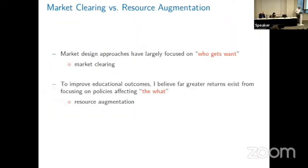I want to set up a debate between two schools of thought in market design, especially in education. The first approach focuses on the question of who gets what — I'll call that the bucket of market clearing policies, inspired by Al's book. I want to contrast that with policies that focus on the 'what' — what is it that we're allocating — which is maybe related to what Derek said about entry barriers.